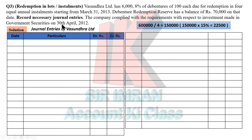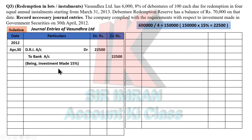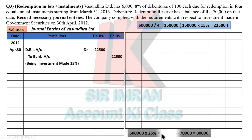The DRI entry is passed on 30th April 2012 — one year before redemption starts — as: DRI to Bank Rs. 22,500. After DRI, for the redemption year starting 31st March 2013, you need to maintain your DRR. For DRR, 25% of Rs. 6 lakhs = Rs. 1,50,000 total required DRR.